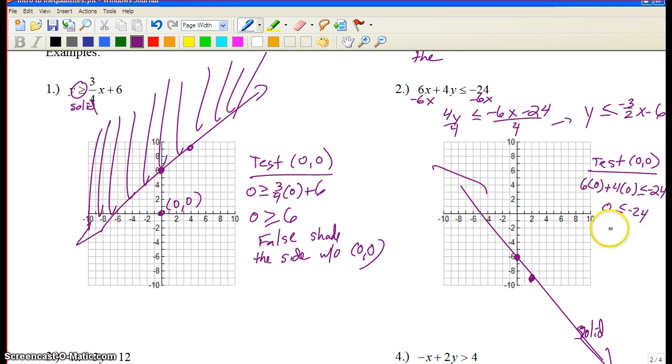You get zero over on the left. Is that less than negative 24? True or false? False. False. So, zero, zero was here. So we shade the side that doesn't have zero, zero on it, because zero, zero we do not want in the solution set for that inequality.